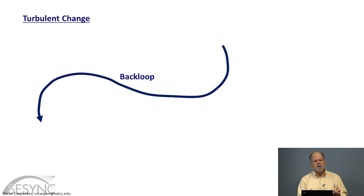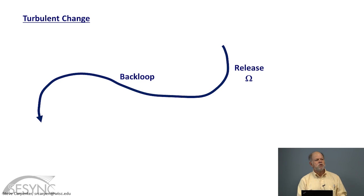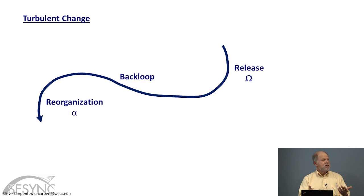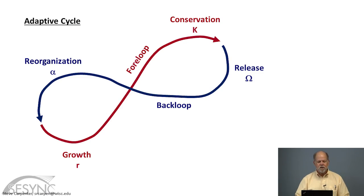There's also a phase of change that's very turbulent and complex and not so easy to understand — we call that the back loop. The back loop begins with a collapse of a highly developed system, which releases resources in some form — maybe money, but maybe nutrients or carbon or space or whatever — and then eventually that leads to a reorganization that starts a new front loop. So the contrast between routine change or the front loop and turbulent change or the back loop is fundamental. Put it all together and it's called the adaptive cycle.